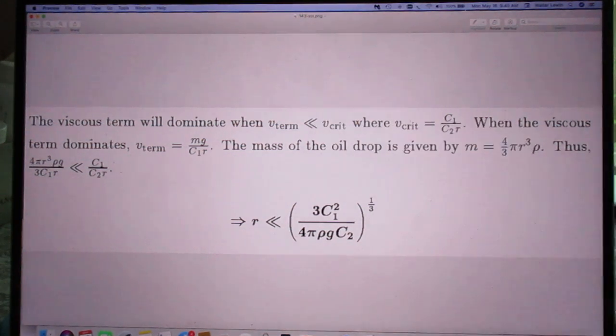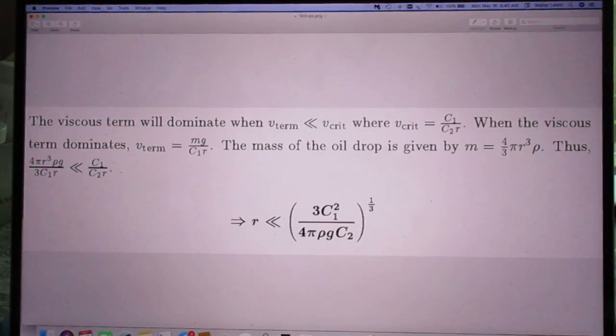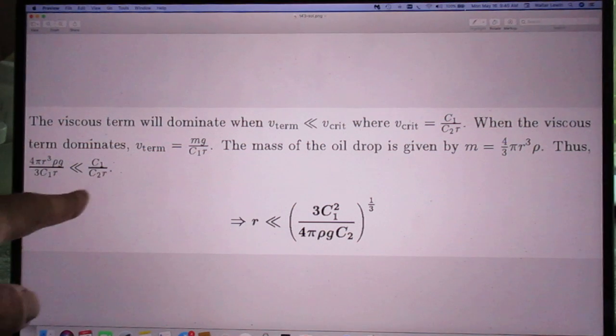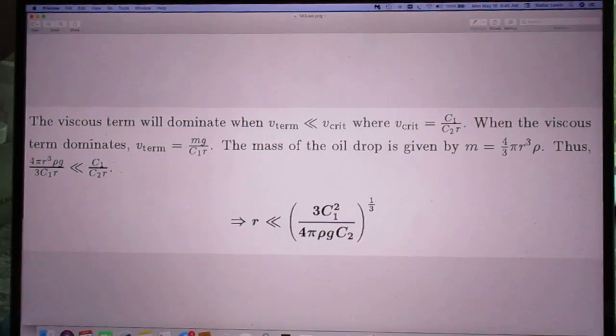So, since v term has to be much smaller than v critical, this has to be much smaller than that, and it means r has to be much smaller than that. Not very intuitive, isn't it?